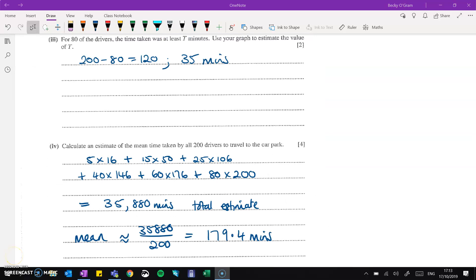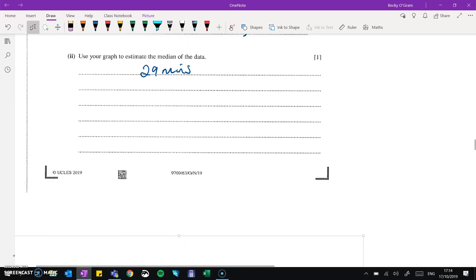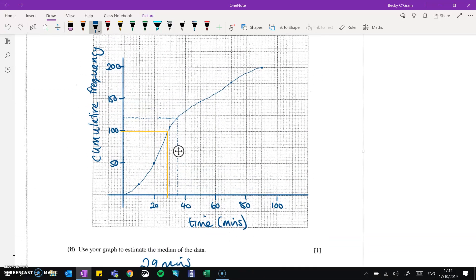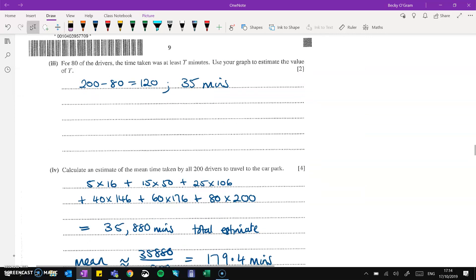Then for 80 of the drivers, the time taken was at least 10 minutes. So 10 minutes or more. So that's saying that our top 80 people was 10 minutes or more. So the top 80 would be the 120th person and above. So we just read off and I'll go back to the graph for that. So there's a 120th person and we can read that off as being 35 minutes.